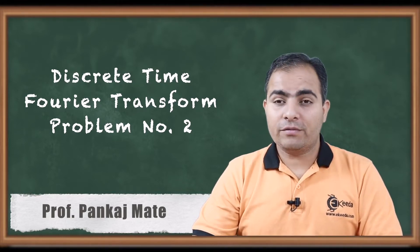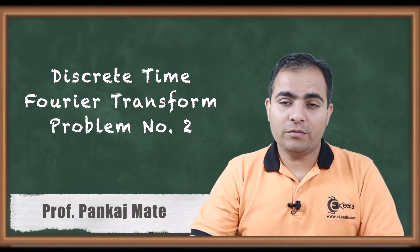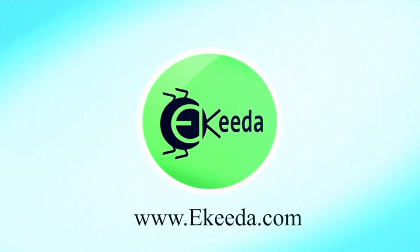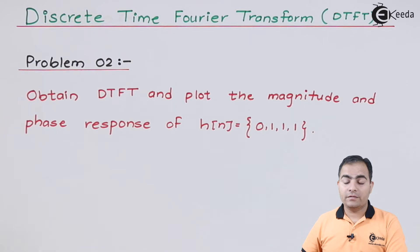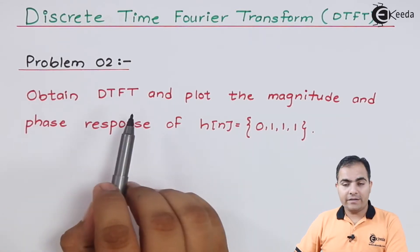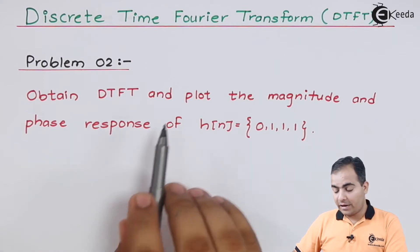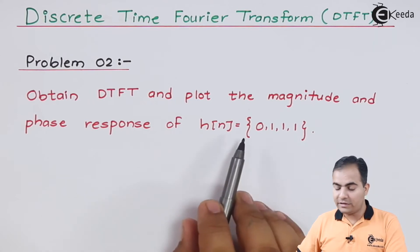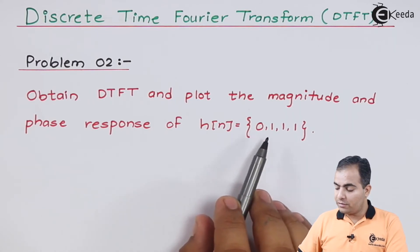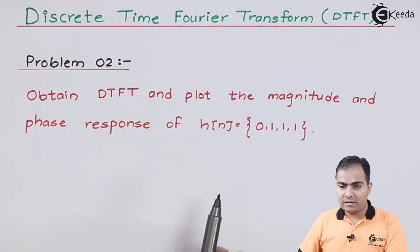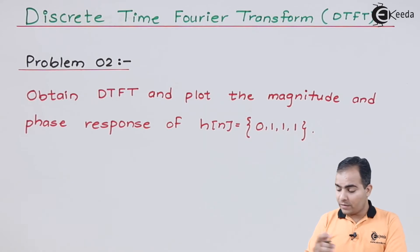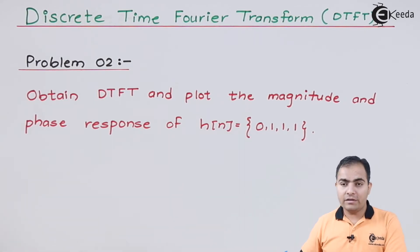First we will see the question — what is given — and then we will move on to the solution. Problem number 2: obtain the DTFT, that is the Discrete Time Fourier Transform, and plot the magnitude and phase response of the sequence H(n) = {0, 1, 1, 1}.